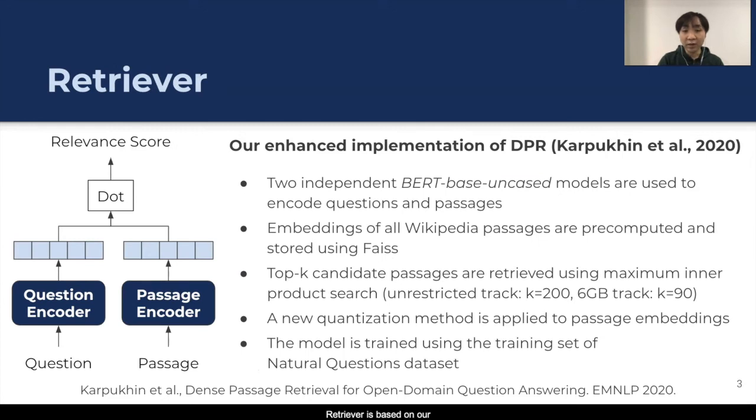Retriever is based on our enhanced re-implementation of dense passage retriever proposed by Karpukhin et al. In particular, we used two independent BERT-based encoder models to encode questions and passages. Embeddings of Wikipedia passages are pre-computed and stored using the open-source FAISS library. At the inference time, top-k passages relevant to the given question are retrieved from the FAISS index. For computational efficiency, we also develop a new method to quantize passage embeddings. The model is trained using the natural questions dataset.